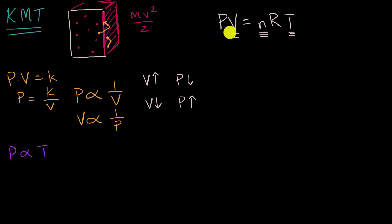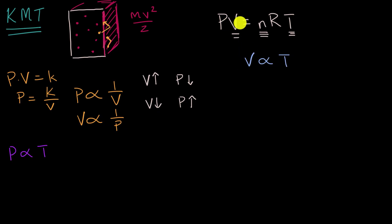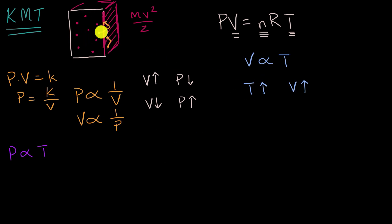Another relationship: if we hold pressure and the number of molecules constant, the ideal gas law tells us that volume is proportional to temperature. If temperature increases, the particles move faster. To maintain the same force per unit area on the container walls, you'd need to increase the volume. This relationship, which is completely consistent with kinetic molecular theory, is known as Charles's Law.